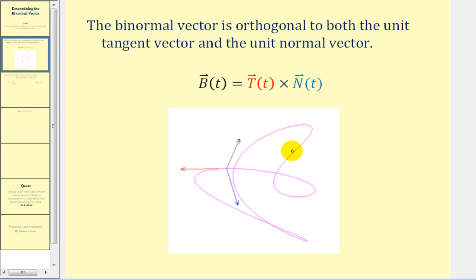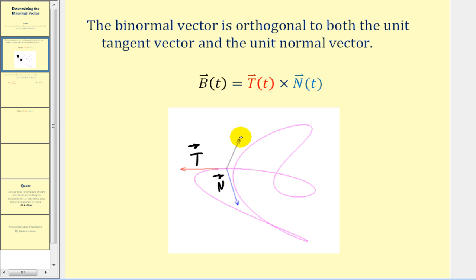Looking at this purple space curve here, this red vector would be the unit tangent vector, this blue vector here would be the unit normal vector, and this black vector here is the new vector — the binormal vector.